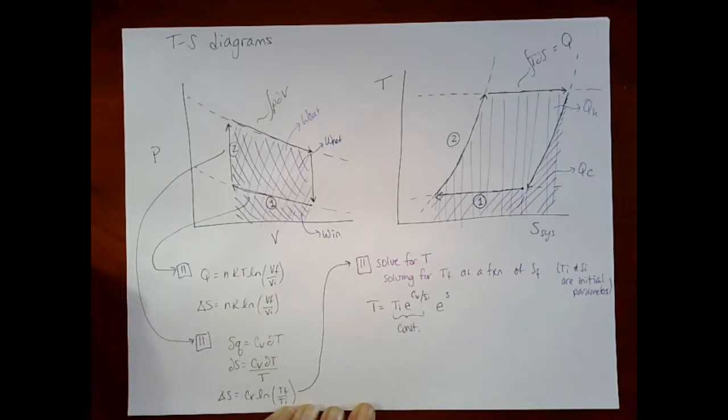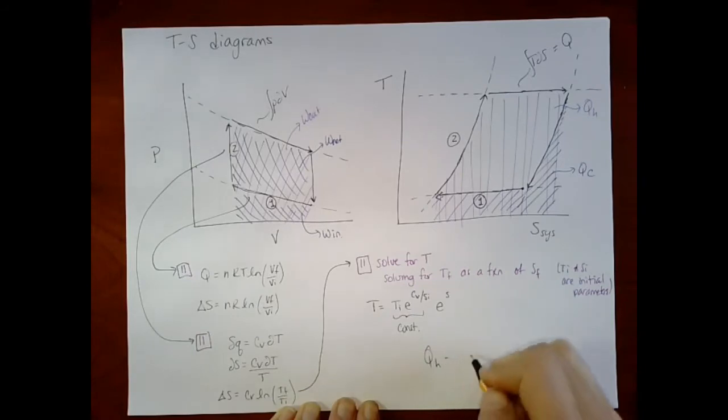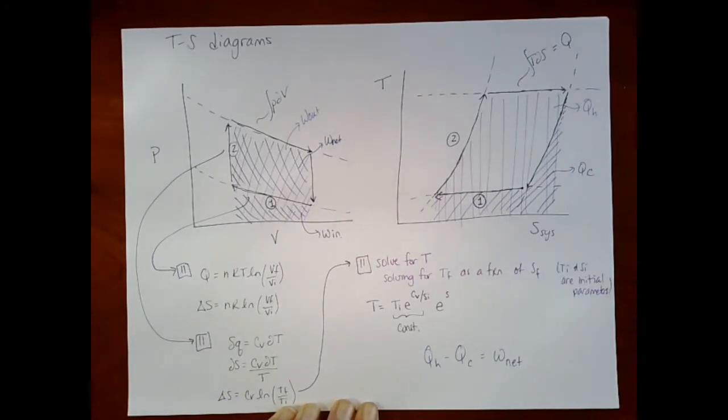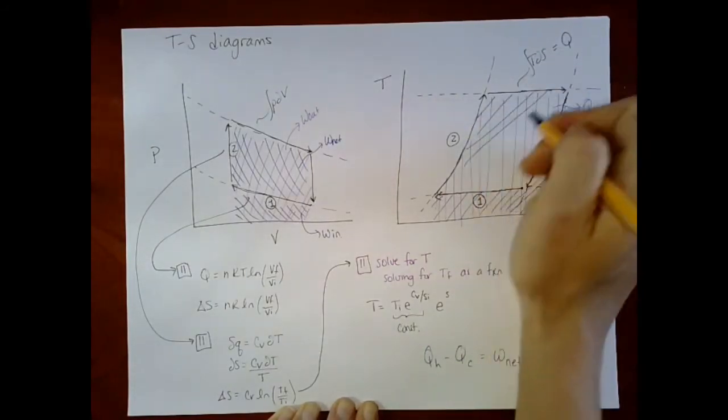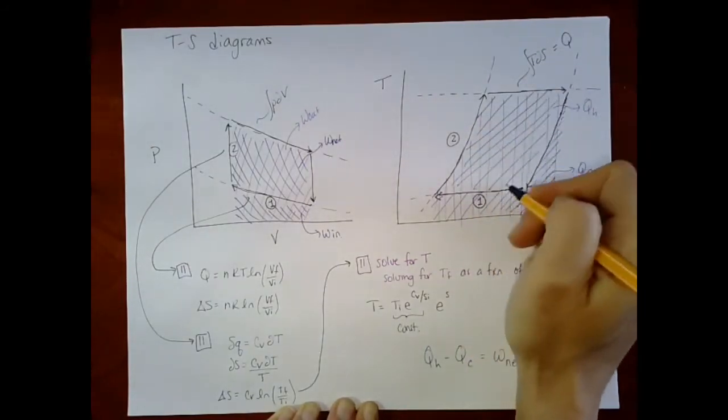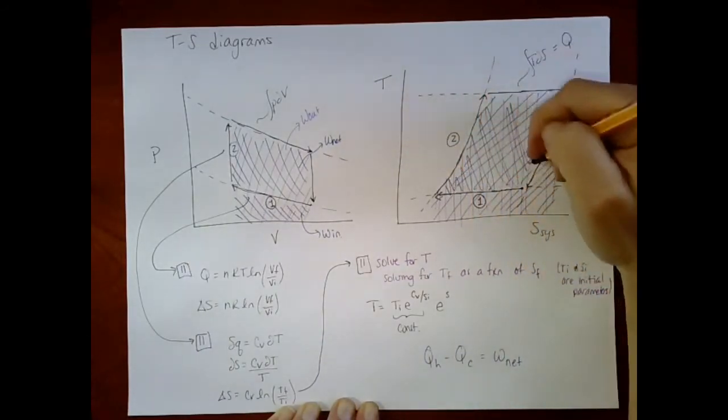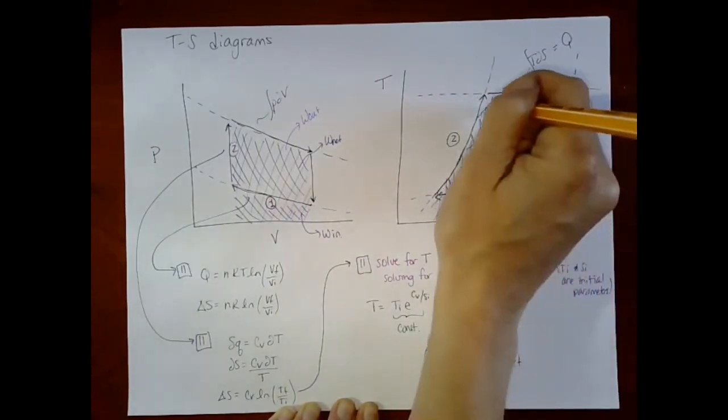And recall from our definitions of the second law, that QH minus QC should be equal to the amount of work that we're able to get out. So this shaded area minus this shaded area, which is the area filled in by this, gets pretty messy. Which is the area filled in by our curve. This is equal to the net work.